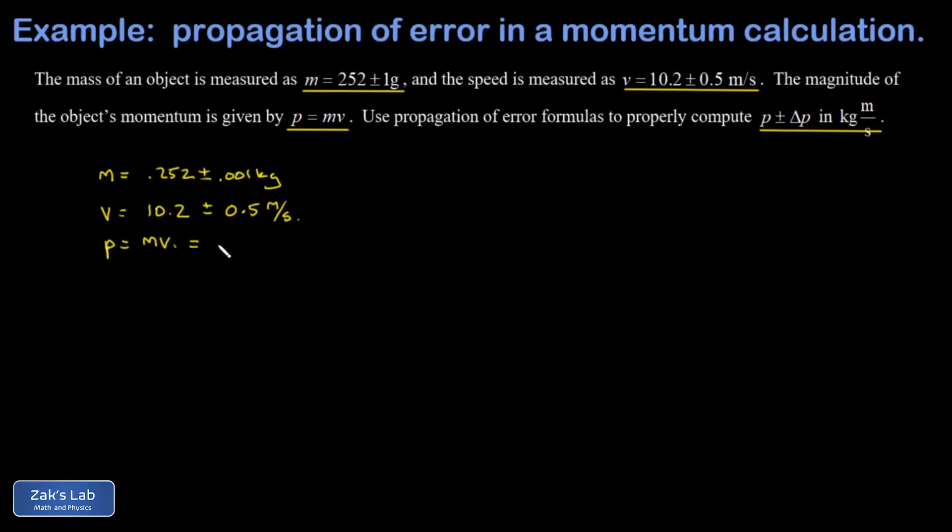This gives me 2.5704, just keeping some extra precision for the moment, kilogram meters per second. But the main part of this problem is computing the uncertainty in p correctly. Because p is a product of two measured quantities, we use the product formula for propagation of error, and I'll post a link to where this was first introduced.